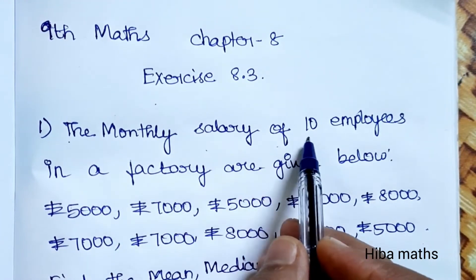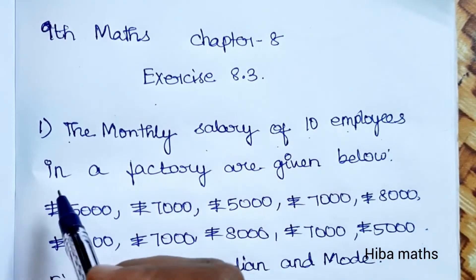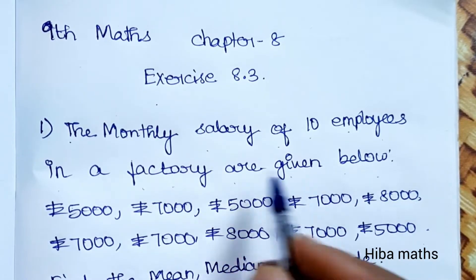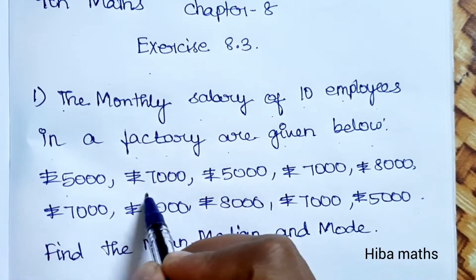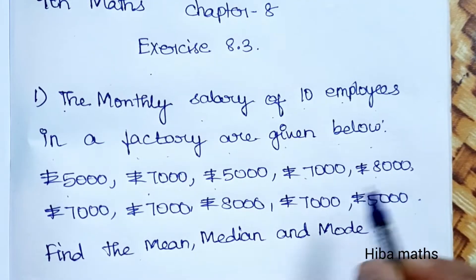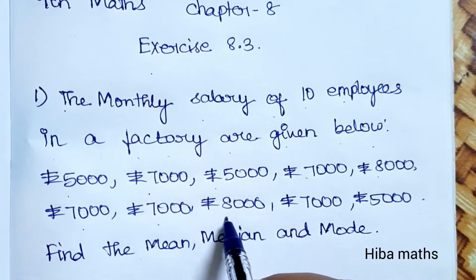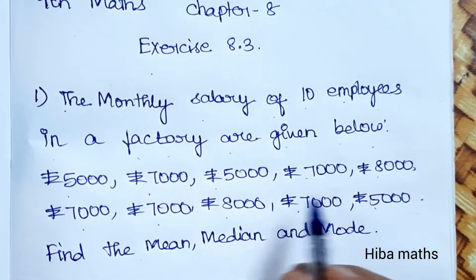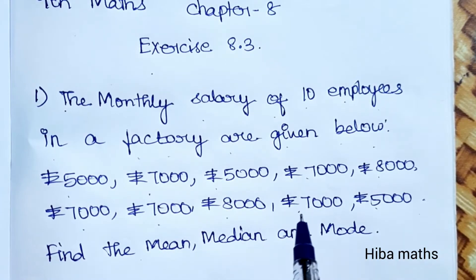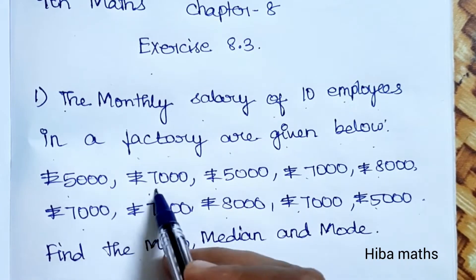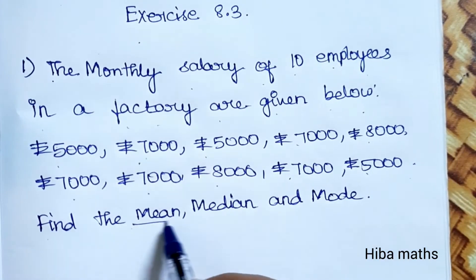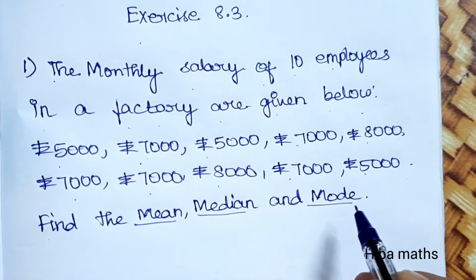The monthly salary of 10 employees in a factory are given below: 5,000, 7,000, 5,000, 7,000, 8,000, 7,000, 7,000, 8,000, 7,000, 5,000. This is the monthly salary for each month. Find the mean, median, and mode.